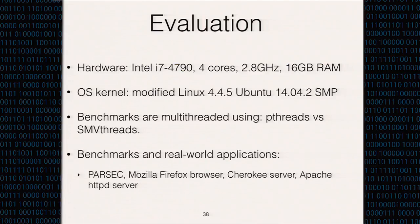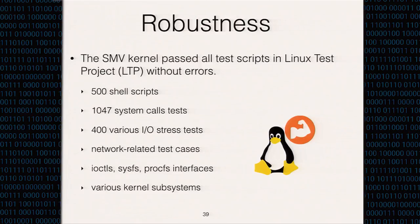We evaluated our SMV prototype on an Intel machine with four cores and 16 gigabytes of RAM running our modified Linux kernel based on a fairly recent release. We compiled all benchmarks into two versions: pthreads versus SMV threads. The benchmarks used are Parsec, Firefox web browser, Cherokee, and Apache web servers. All experiments can be reproduced on today's x86 hardware. To ensure our modifications didn't break Linux kernel correctness, we tested our SMV kernel with the Linux Test Project, which contains over 500 shell scripts and stress tests for the Linux kernel, including IO, network, SysFS, ProcFS, and various kernel subsystems including the memory subsystem. The SMV kernel passed all stress tests with no system errors or kernel panic.